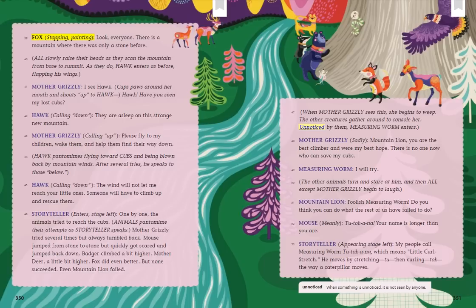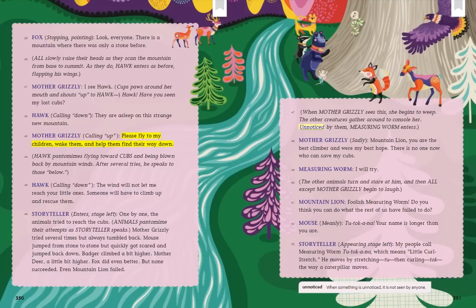Fox, stopping and pointing: Look, everyone. There is a mountain where there was only a stone before. All slowly raise their heads as they scan the mountain from base to summit. Hawk enters as before, flapping his wings. Mother Grizzly cups her paws around her mouth and shouts up: Hawk! Have you seen my lost cubs? Hawk, calling down: They are asleep on this strange new mountain. Mother Grizzly, calling up: Please fly to my children. Wake them and help them find their way down. Hawk pantomimes flying toward cubs and being blown back by mountain winds. After several tries, he speaks: The wind will not let me reach your little ones. Someone will have to climb up and rescue them.